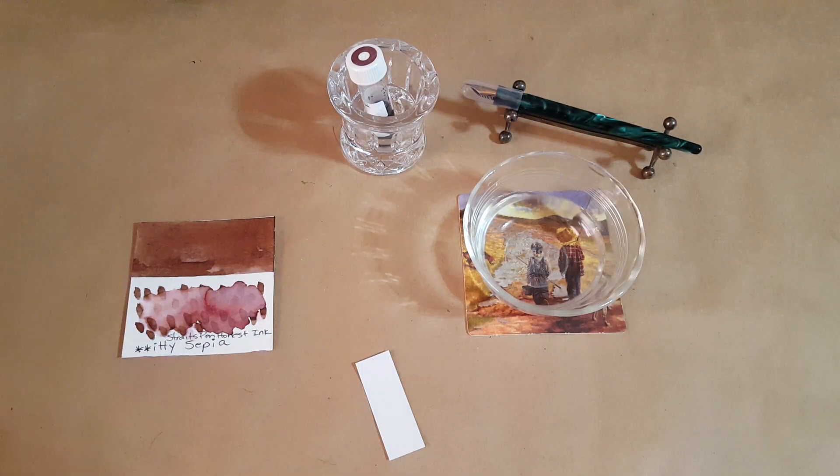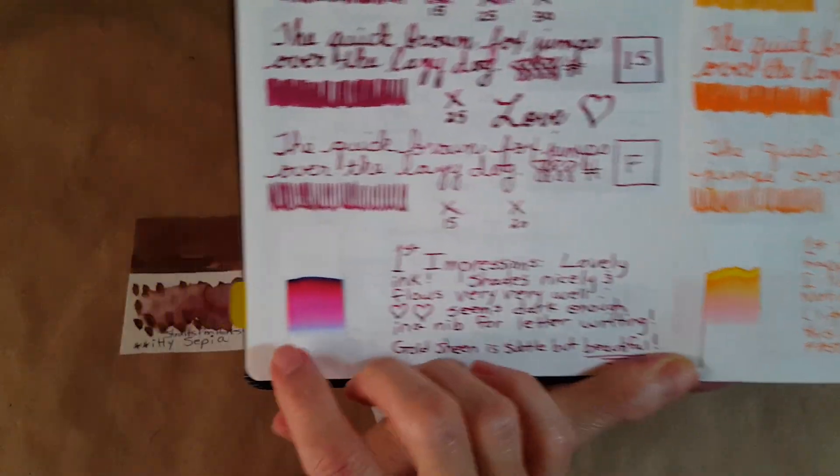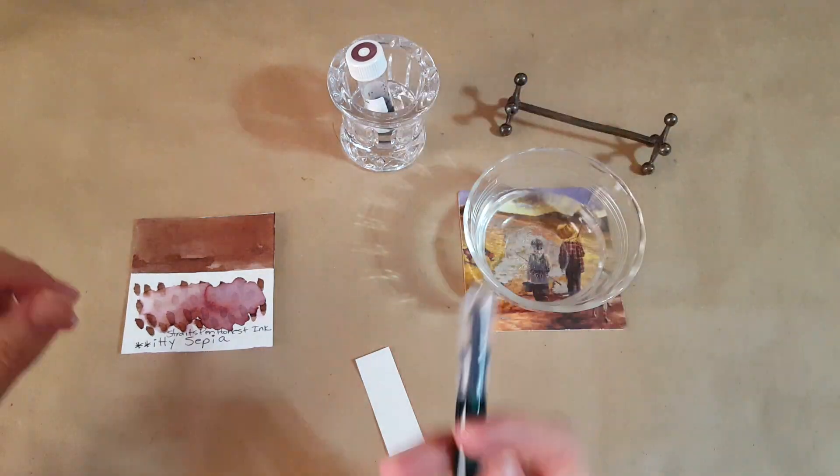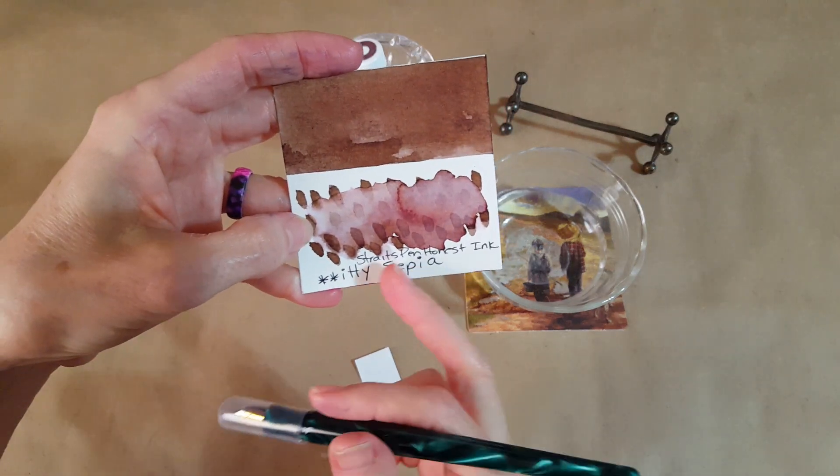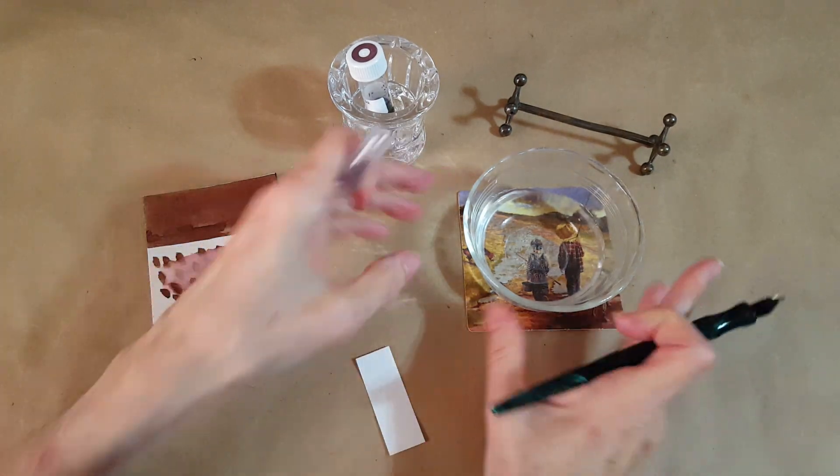But the way I do it now I like better. I draw a line on the strip and then I just put it in there. I'll show you because it's easier to show than tell really. So today's ink is bleep sapia from Straits Pen Honest Ink, it is a brown. So let's see what happens.